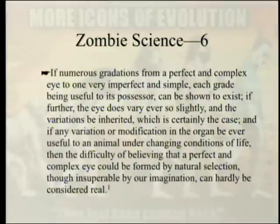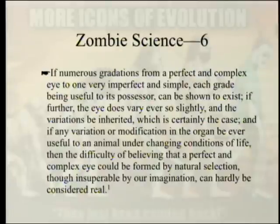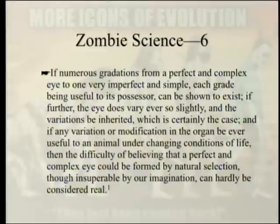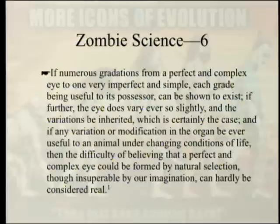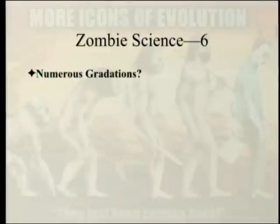Darwin immediately suggested a way to overcome the difficulty: 'If numerous gradations from a perfect and complex eye to one very imperfect and simple, each grade being useful to its possessor, can be shown to exist; if the eye does vary ever so slightly and the variations be inherited; and if any variation in the organ be ever useful to an animal under changing conditions of life — then the difficulty of believing that a perfect and complex eye could be formed by natural selection, though insuperable by our imagination, can hardly be considered real.' You just have to think it's impossible.